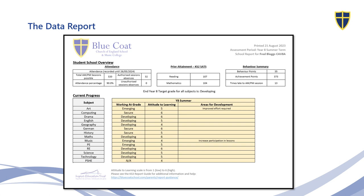When you receive a normal data report, the top section — the school overview — gives you the attendance breakdown in the top left hand side. It gives you the prior attainment in Key Stage 2 SATs, which is the 100 score SATs, and it gives you the behaviour summary as well. With the behaviour summary, you will see behaviour points accrued, achievement points, and the times late to AM and PM registration.